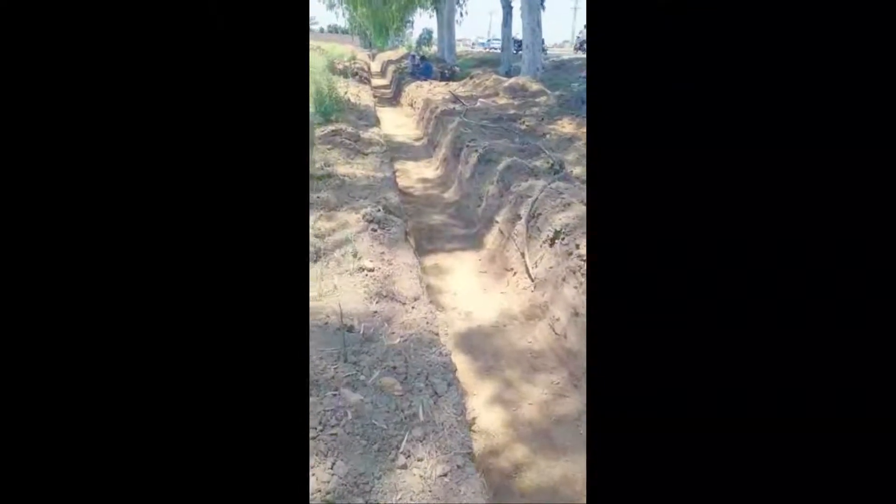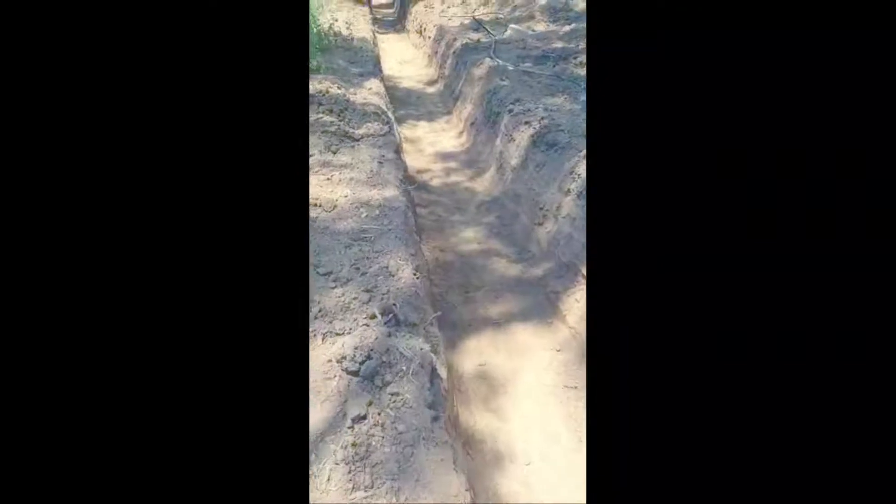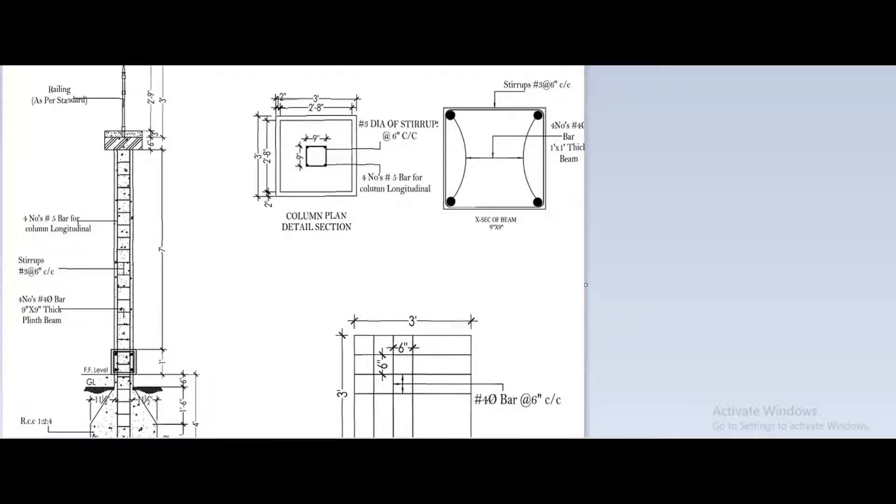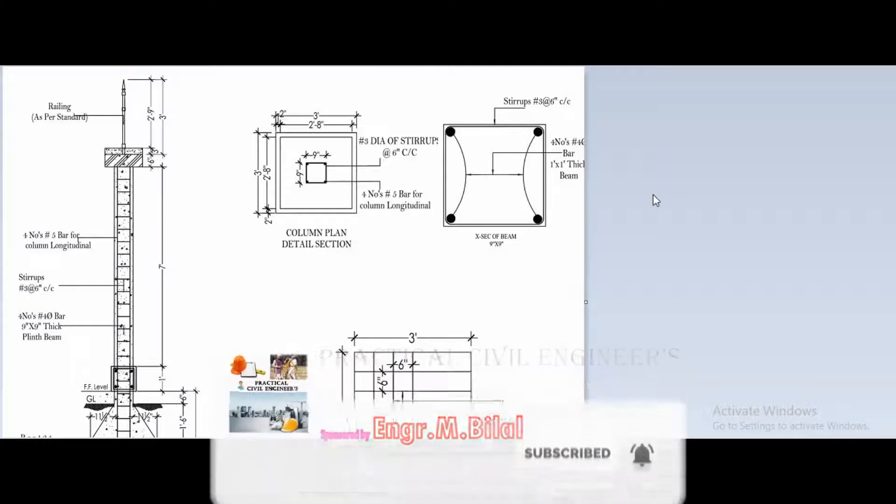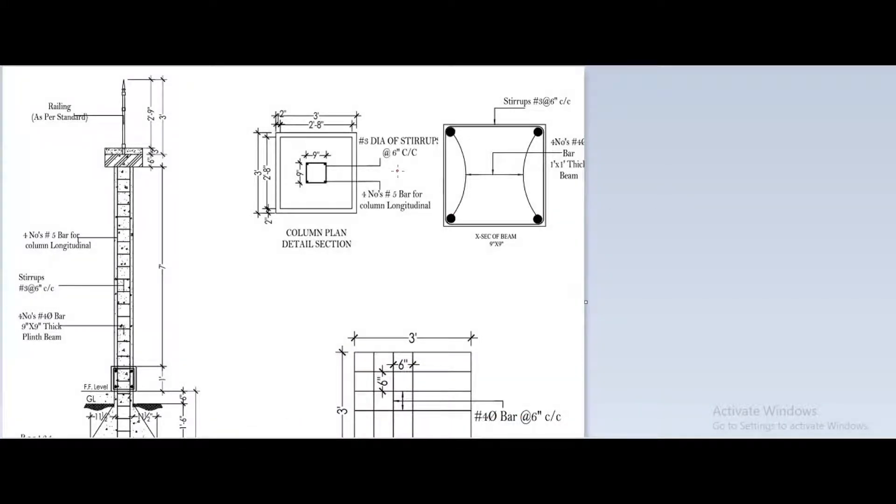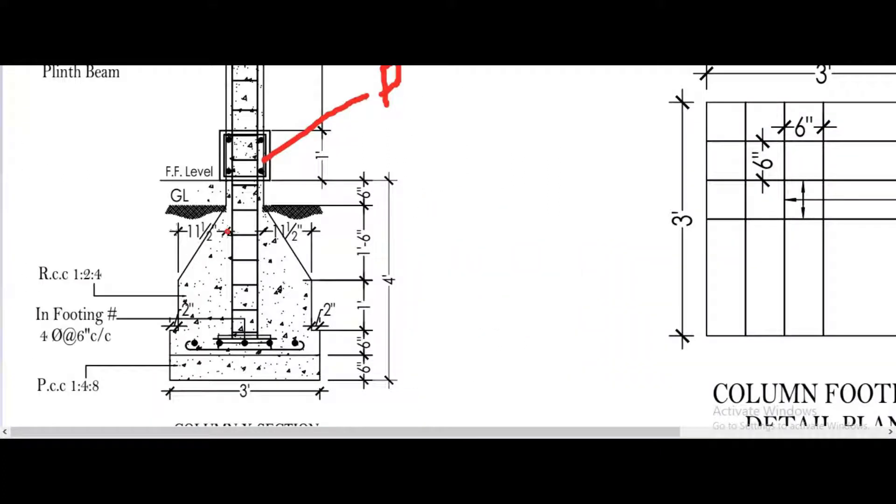But first we are going to discuss this drawing in detail, so let's start. Now we will discuss the drawings of the boundary wall in detail. We will discuss the column, RCC column cross-section, and the beam which is called plinth beam. We will discuss the footing in detail. So this is the ground level.